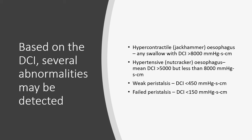A hypertensive or nutcracker esophagus has a mean DCI between 5000 and 8000. Weak peristalsis has a DCI of less than 450 and failed peristalsis is where the DCI is less than 150.